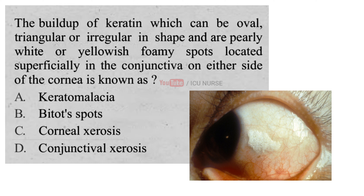The buildup of keratin which can be oval, triangular or irregular in shape, and are pearly white or yellowish foamy spots located superficially in the conjunctiva on either sides of the cornea is known as: A. Keratomalacia, B. Bitot's spots, C. Corneal Xerosis, D. Conjunctival Xerosis. And the correct answer is B. Bitot's spots. Bitot's spots are a specific manifestation of vitamin A deficiency.